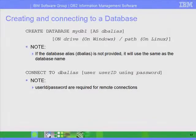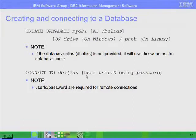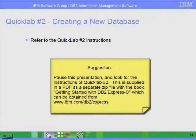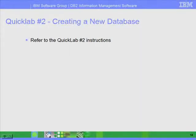To connect to a database, you use the syntax: CONNECT TO the database alias — which, if you don't provide an alias, will be the same as the name of the database — and then you can optionally specify a user ID and password. We will show you some connection examples later on in these lessons. I suggest you pause and start working on Quick Lab number two, which provides an exercise to create a new database.